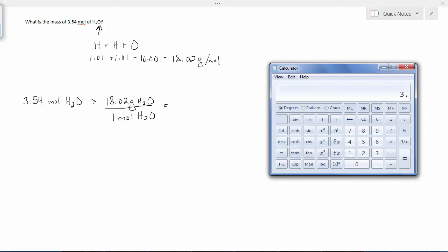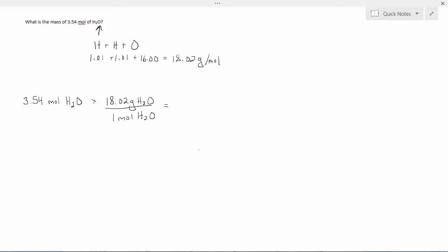I'm going to find my handy calculator here. 3.54 times 18.02 equals 63.79. So 63.79 grams of water is the same as saying 3.54 moles of water.